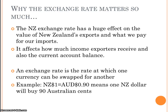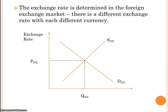The exchange rate is just a trading number — how much one currency can be swapped for another. For example, if one New Zealand dollar is worth AUD 0.90, that means one New Zealand dollar will buy 90 Australian cents. We have different exchange rates for pretty much every currency. The big ones for New Zealand are our main trading partners: the US dollar, the Euro, the Australian dollar, and the Chinese currency. Each exchange rate is determined by the foreign exchange market through demand and supply.